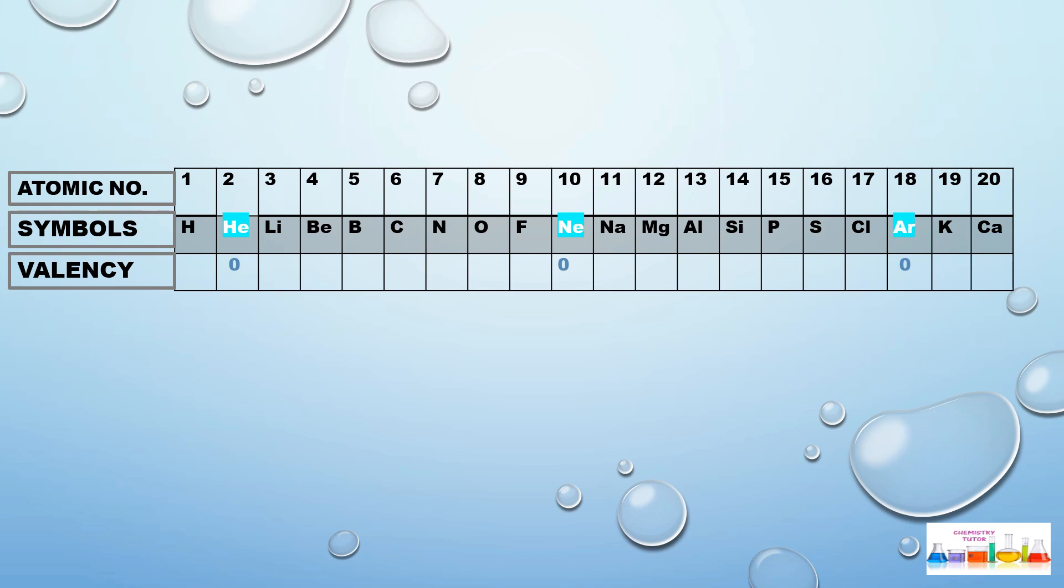Among these first 20 elements, if we see the noble gases - helium with zero valency, neon with zero valency, argon with zero valency - because these are stable gases, so their valencies are zero. So first we will assign the zero valency to the noble gases.